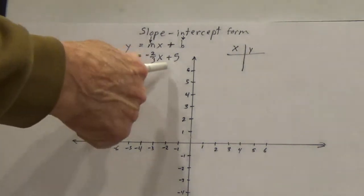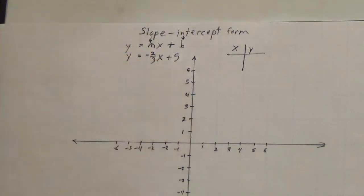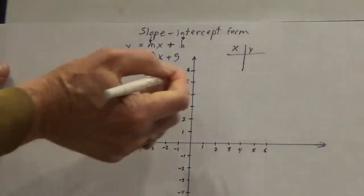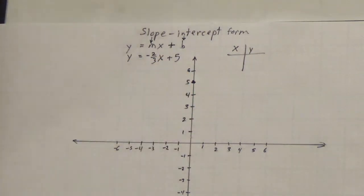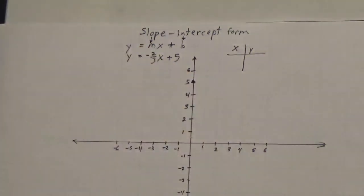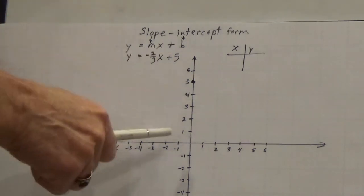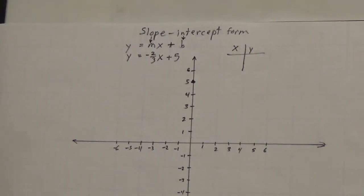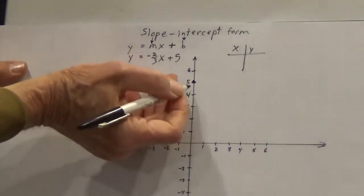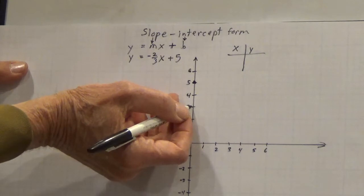This is slope-intercept form. My y-intercept — I've chosen 5 because it stays on my graph nice. Now my slope is negative. That means it goes downhill from left to right. There's an inverse relationship between the rise and the run. As y decreases, x increases. As y decreases by 2, x increases by 3.